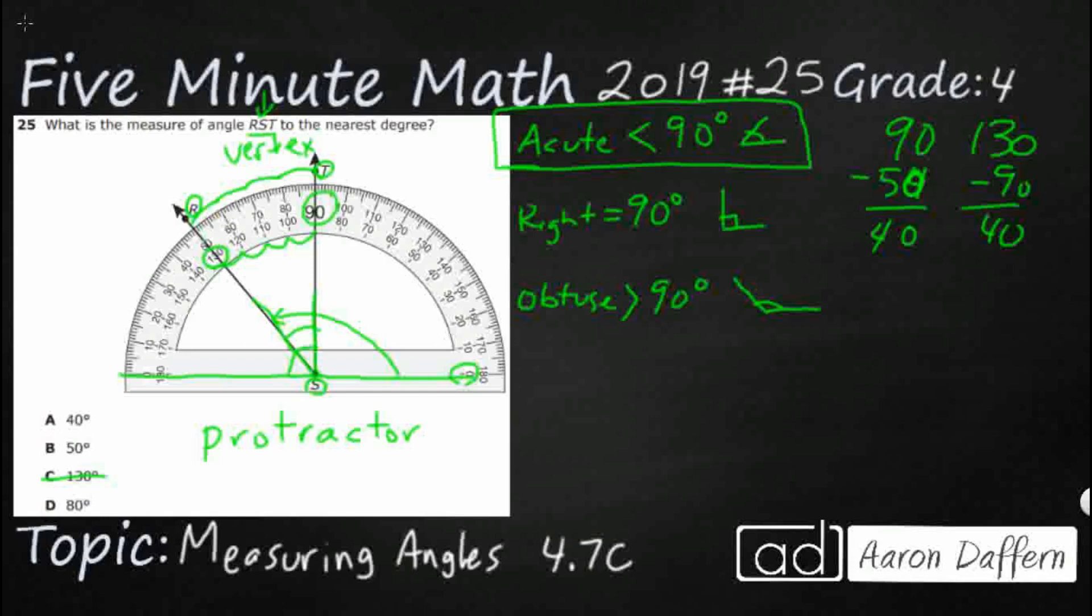Now, where do these other numbers come from? These, the 80? Well, take a look at this. Take a look at these two right here. On the inside is 130. And on the outside is 50. So 130 minus 50. That's going to get you 80.